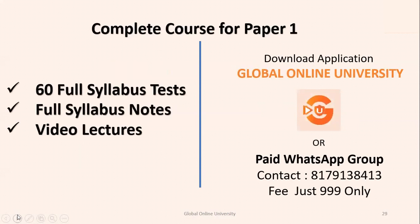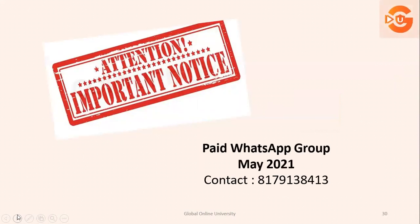Iske alawa, humare paas complete course hai paper 1 ke liye, which includes 60 full syllabus tests, full syllabus notes, and video lectures, which you can avail by downloading the Global Online University application. Ya toh aap paid WhatsApp group join kar sakte ho, jiska number screen peh reflect ho raha hai, jiski fees hai 999 rupees. There is also an important announcement — hamara naya paid WhatsApp batch start ho raha hai May 2021 se, that is ideally 2nd May 2021. Contact details screen peh reflect ho rahi hai. If you have any query or doubt, contact on the given number.